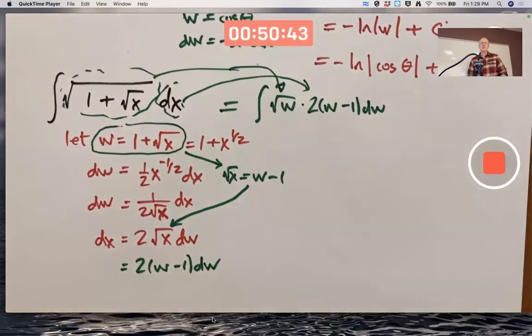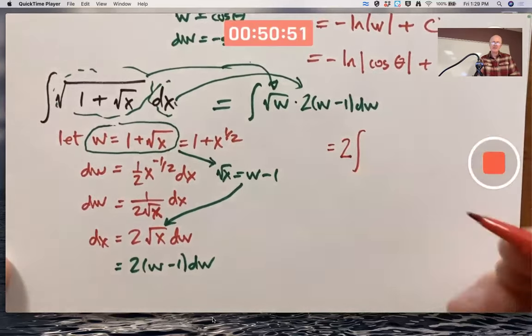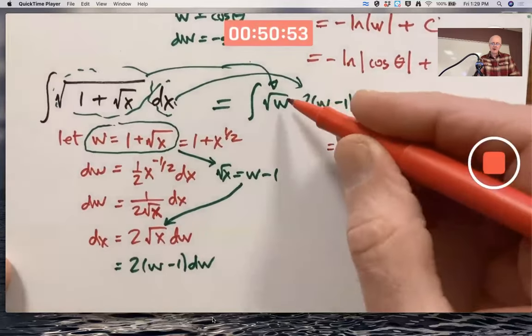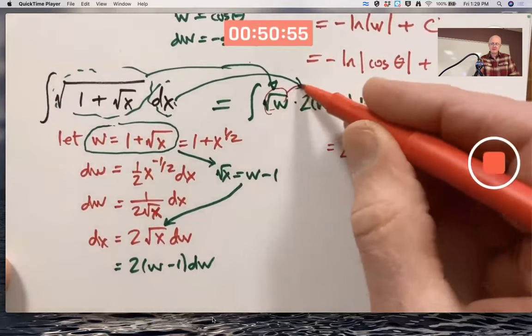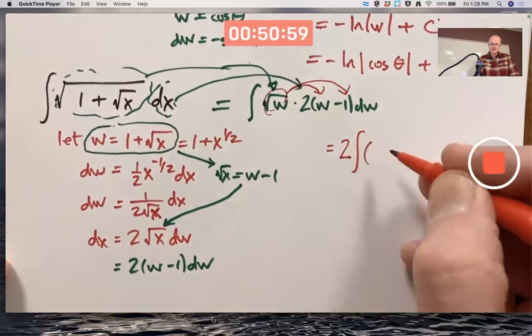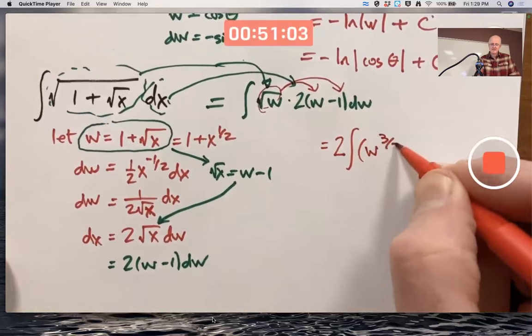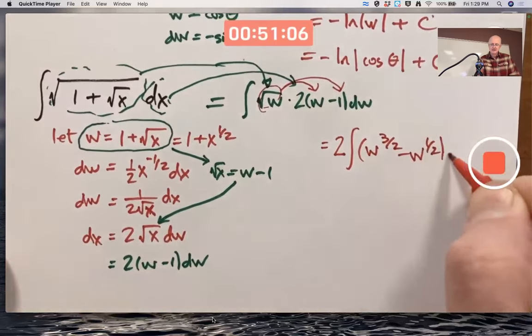Now, that integral doesn't look much easier, but it is. You can bring the 2 out in front. It's constant. And the square root of w can be distributed through the parentheses here to get, probably best to write it as, w to the 3 halves minus w to the 1 half dw.